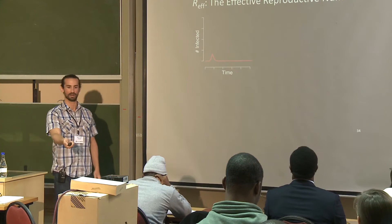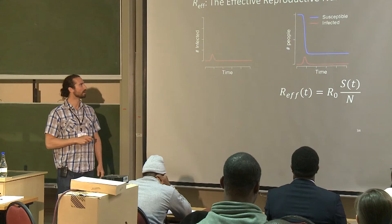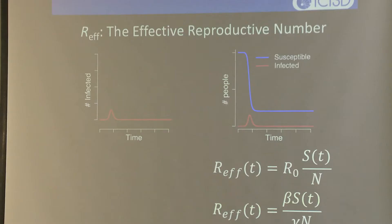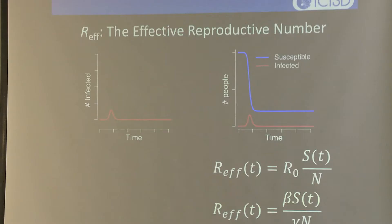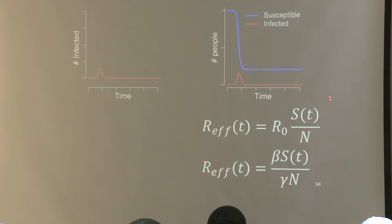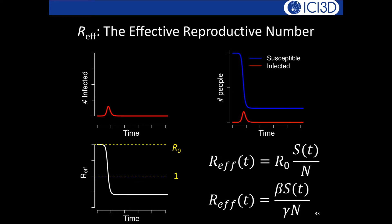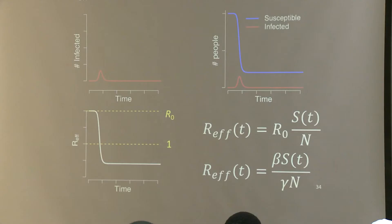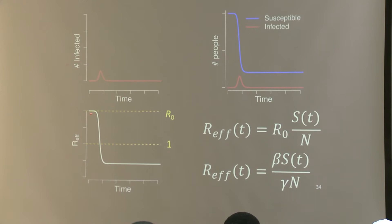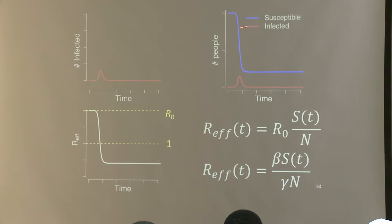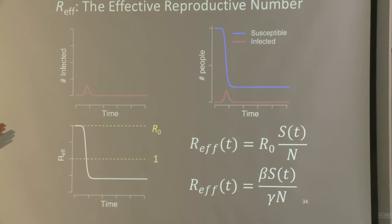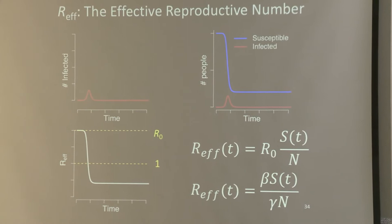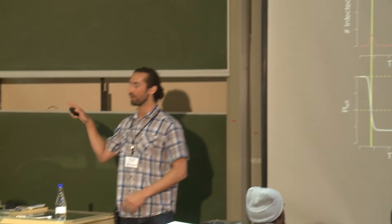As the epidemic progresses, R_effective starts at R0, declines as the susceptible proportion falls, and crosses one exactly at the epidemic peak. R_effective then falls below one as the epidemic declines. For people outside this field, it's tempting to think something changed — behavior, control measures, viral evolution — but often the declining susceptible proportion is driving the dynamics.